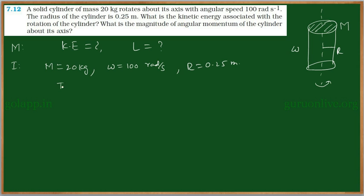Now, first of all, we need to find out the moment of inertia of the body, which is equal to half MR square. For a solid cylinder, when it is rotating around its axis of symmetry, the moment of inertia formula I is equal to half MR square.